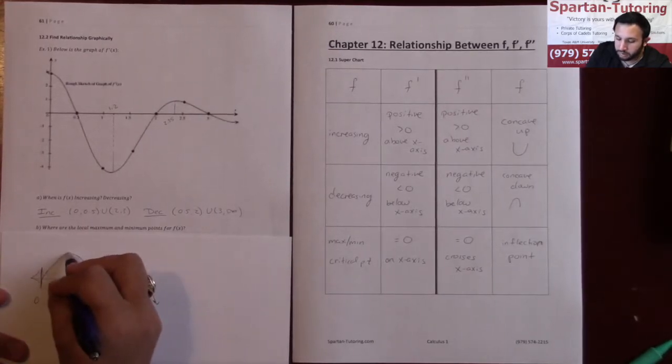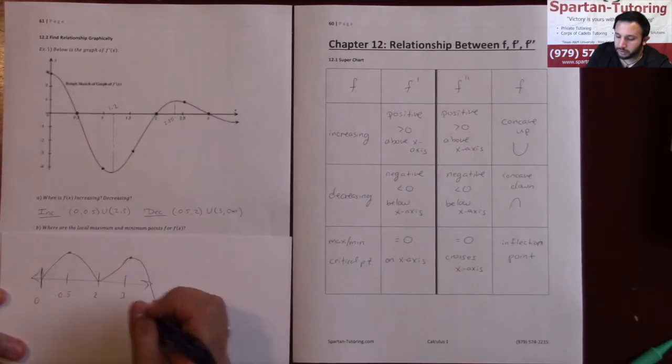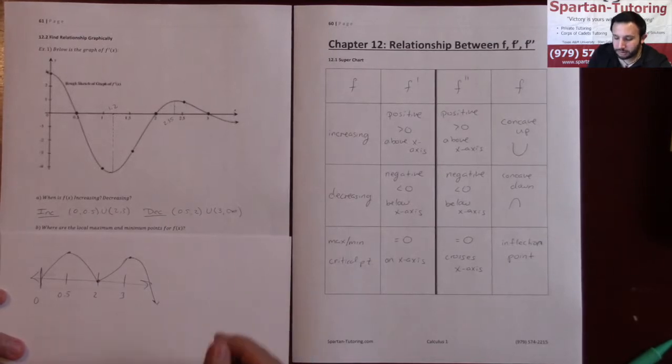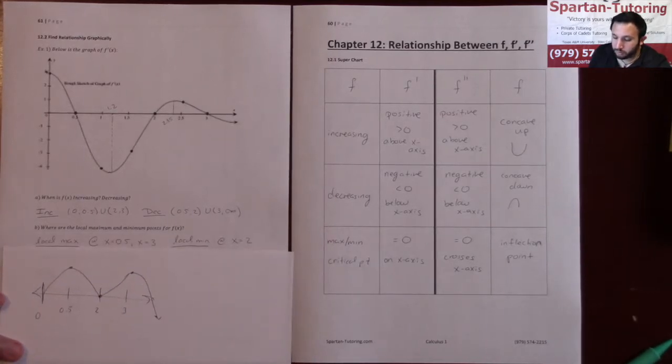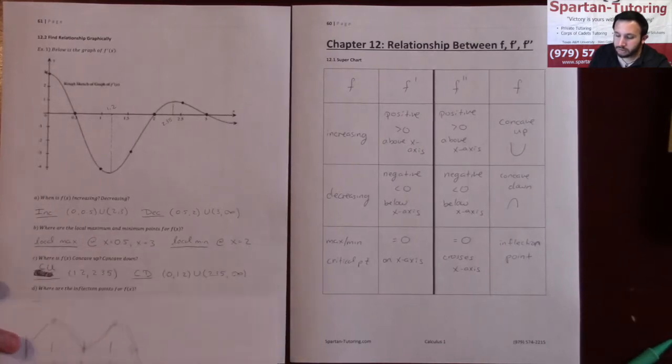So guess what, you've got a local max here at 0.5 and 3, and you've got a local min right there at 2. So your local max is at 0.5 and 3, your local minimum is at x equals 2.